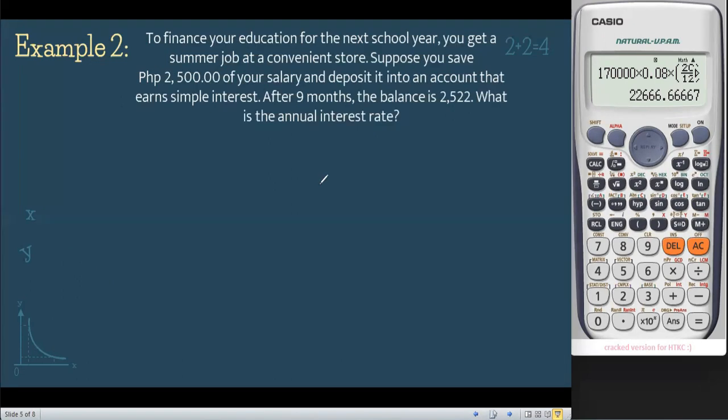Example number 2: To finance your education for the next school year, you get a summer job at a convenience store. Suppose you save 2,500 pesos of your salary and deposit it into an account that earns simple interest. After nine months, the balance is 2,522 pesos. What is the annual interest rate? So we're finding the annual interest rate.